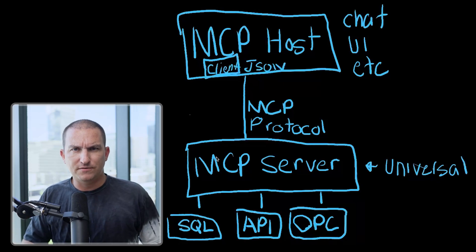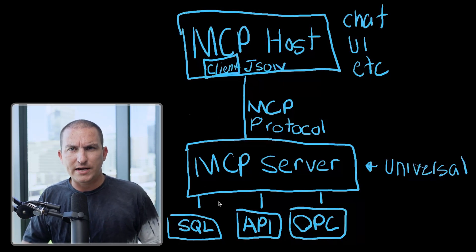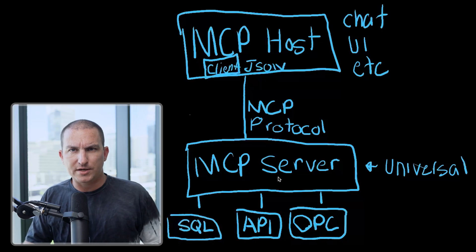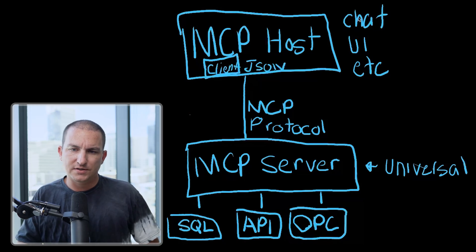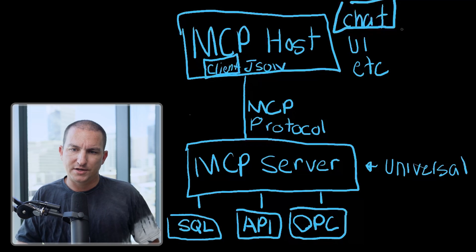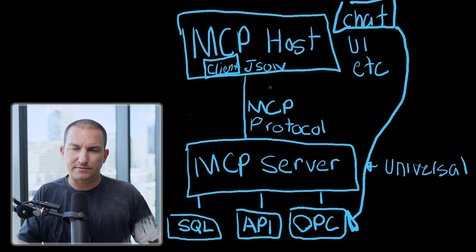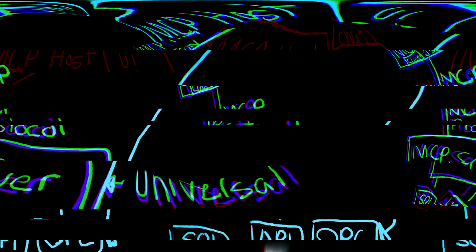From within this server, we can route out to our native endpoints — whether that's a SQL database, an API, a REST API, OPC UA, or a BIO system, etc. This is the best way to get your chatbot to interface with the data down here using MCP. The takeaway: the host speaks MCP once, the servers speak native dialects, and you can swap servers in or out without rewriting the host.